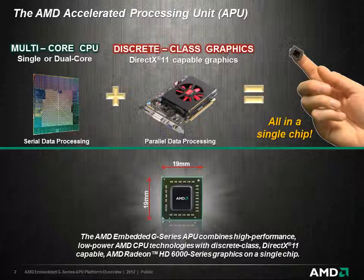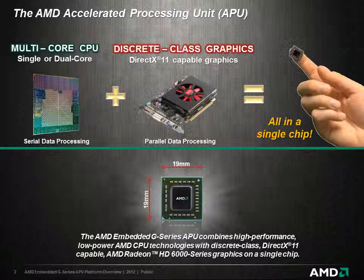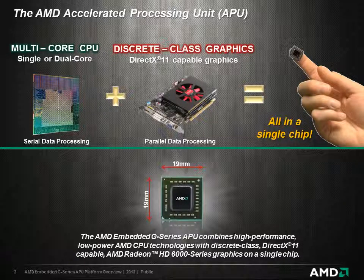The AMD Embedded G-Series APU combines high-performance, low-power AMD CPU technologies with discrete-class, DirectX 11-capable AMD Radeon HD 6000 Series graphics on a single chip. It's the best of both worlds.